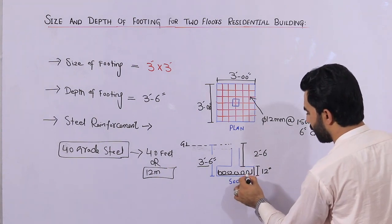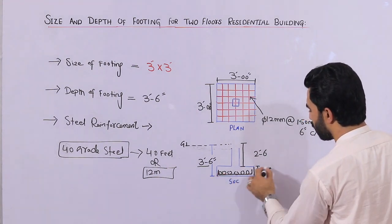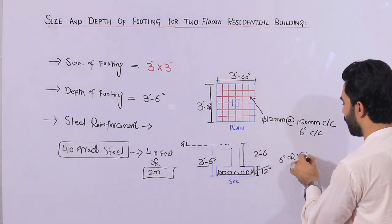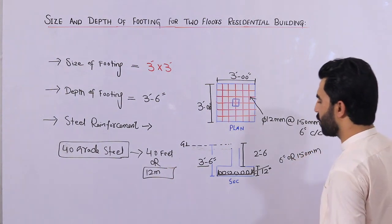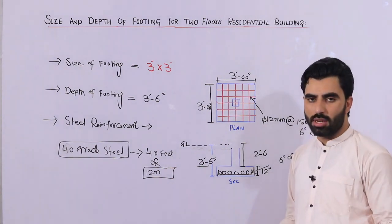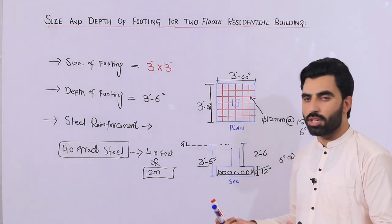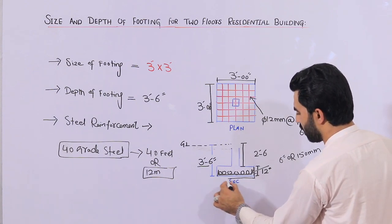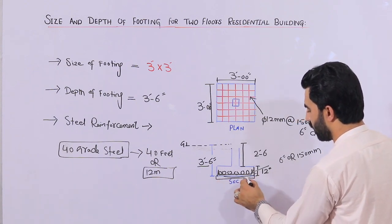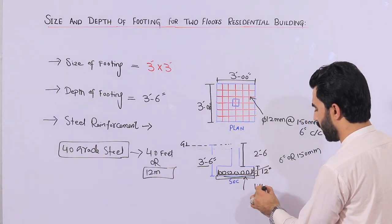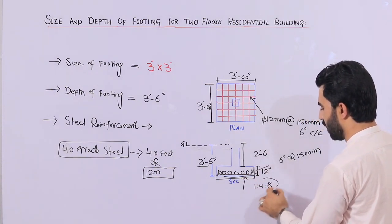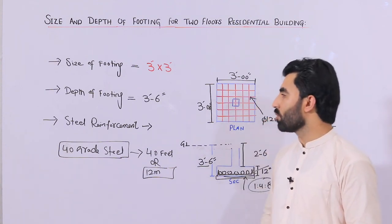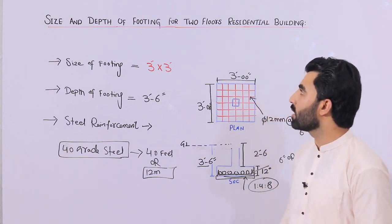For the hooks at the end of the bars, the hook length should be up to six inches or 150 mm. In the 12-inch bit depth, keep three inches concrete cover at the bottom and three inches at the top. For the lean concrete below, you can use a 1:8 ratio — this is called lean concrete — just to provide a surface for the steel mesh. I hope this short video helps you understand the size and depth of footing for a two-floor residential building.